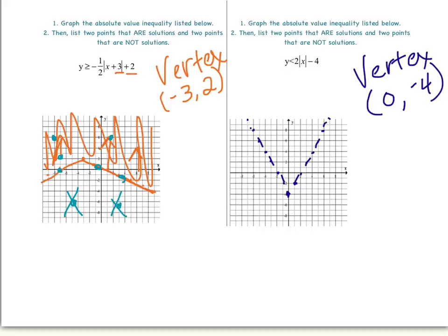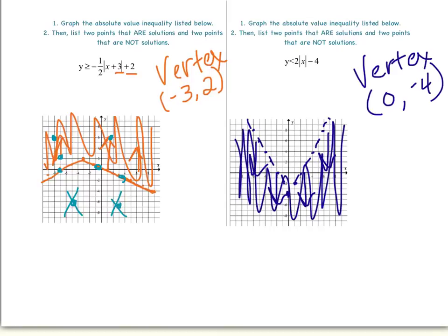Remember, any point that falls on the dashed line will not be a solution. So now where do I shade? I see that this says y is less than — that tells me I will be shading below the line. So I shade below the line. Anytime I see a point that's in the shaded area, that is a solution. If the point falls on the dashed line, it is not a solution. And if the point falls outside the shaded region entirely, it's also not a solution.